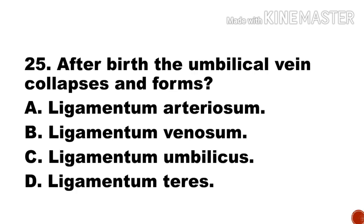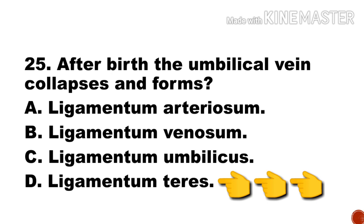Last question for this discussion: After birth, the umbilical vein collapses and forms — a) ligamentum arteriosum, b) ligamentum venosum, c) ligamentum umbilicus, d) ligamentum teres. Option d, ligamentum teres, is the right answer. Fetal circulation changes to normal circulation due to the expansion of lungs at birth. After birth, ductus arteriosus converts to ligamentum arteriosum, and the umbilical vein changes to ligamentum teres.